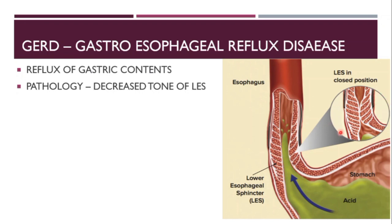When the stomach acid tries to go up, the lower esophageal sphincter closes tightly and stops the reflux of acid. But in GERD, the tone of the lower esophageal sphincter is decreased — the strength of this muscle is decreased. So when the tone of the LES is decreased, the acid can easily go up into the esophagus, which causes GERD.